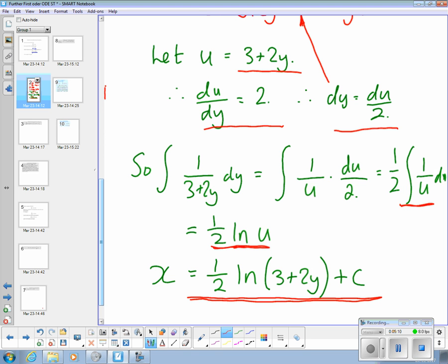So x is equal to half ln of 3 plus 2y, close brackets, plus c. So that's the answer to the first problem.